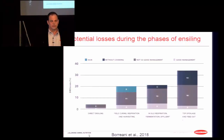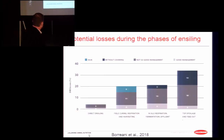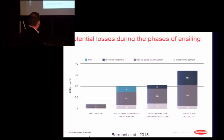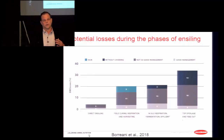Throughout the process there will be losses: pre-ensiling, during wilting, packing the silo correctly or not, and covering. A graph shows all these different types and levels of management — direct ensiling, field curing respiration, wilting in silo, fermentation, effluent, top spoilage, and feed-out. There is a big influence from the level of management, especially without covering the silo. Some practices we can control, others we cannot, so we have to make sure we are on top of our game when making silage.